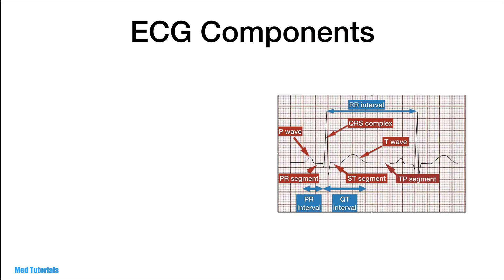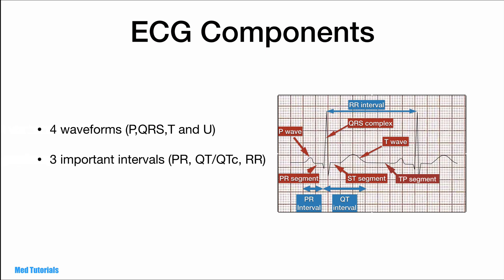When we look at the ECG we see different components. We have four waveforms: P, QRS, T, and the U waves. The U wave may be normally absent in many of the ECGs that you read. We have three important intervals: the PR, the corrected QT interval, and the RR interval. And we have three segments: the PR, the ST, and the TP segments.